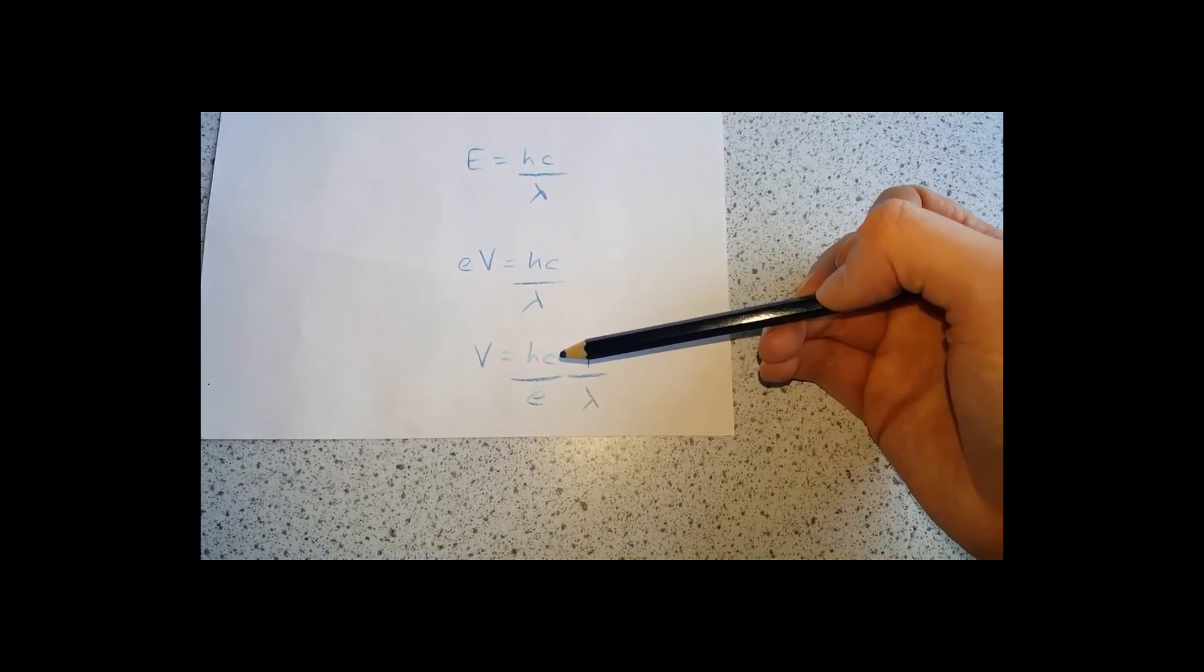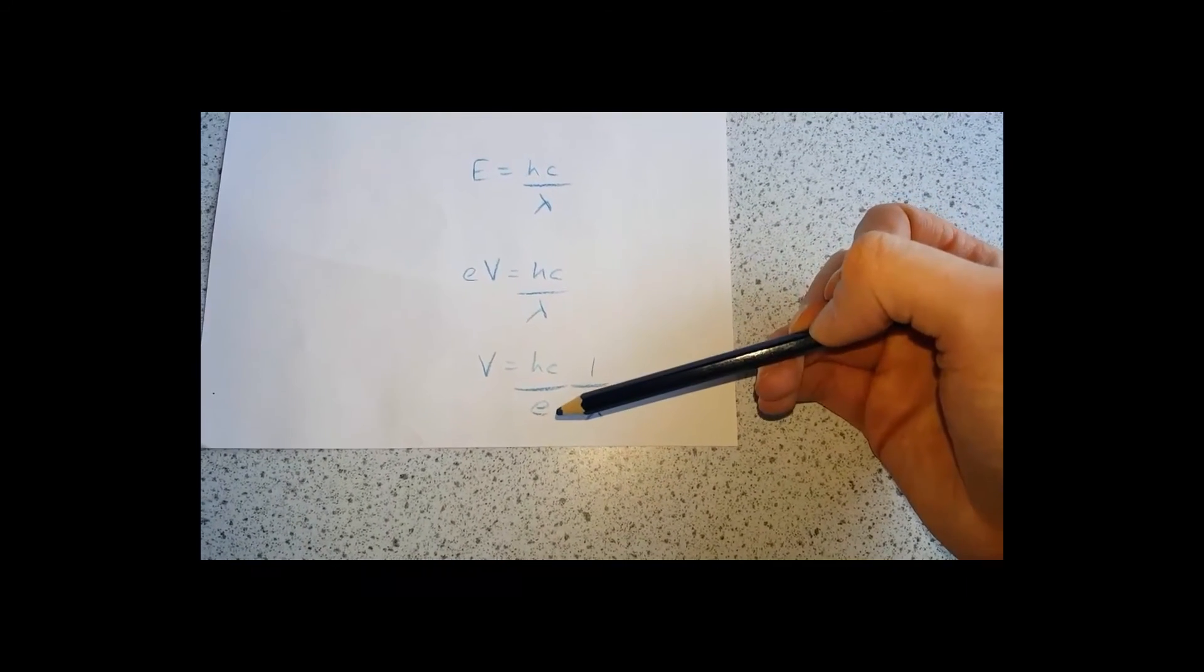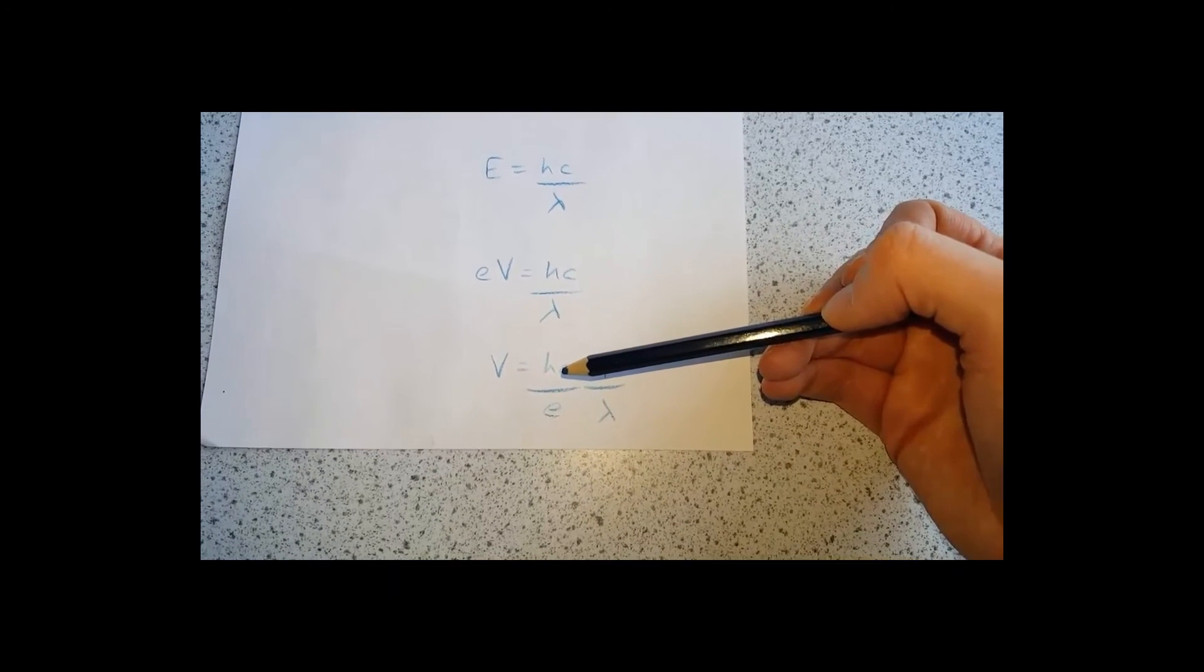Once you've determined the gradient, you can then divide it by c and multiply it by e. That will give you h, the Planck constant.